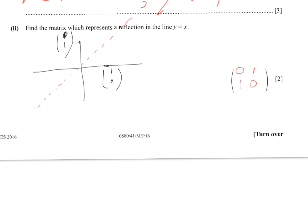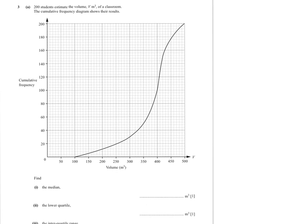That was it for transformations. Let's move on to the next page, which is about cumulative frequency. We're still solving paper 41 from 2016. Question 3 is about cumulative frequency — you always get a figure roughly like this. 200 students estimate the volume V cubic metres of a classroom, and the cumulative frequency diagram shows their results.